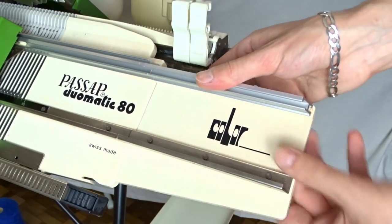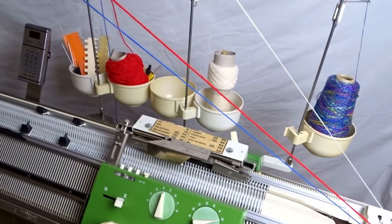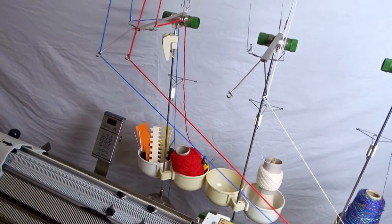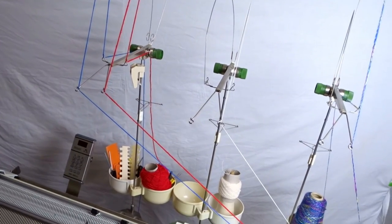If you are using a color changer, the yarn must be arranged the same way as it has been threaded into the machine, from left to right.